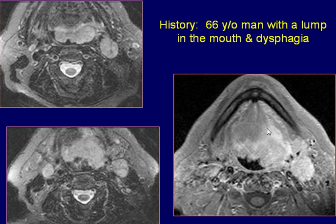The axial fat-saturated gadolinium-enhanced T1-weighted image at a more caudal level shows the mass extending inferiorly and laterally. On the left side, the left parapharyngeal space is involved.